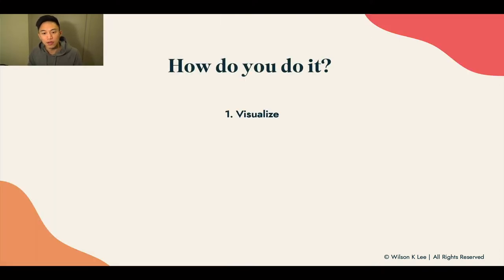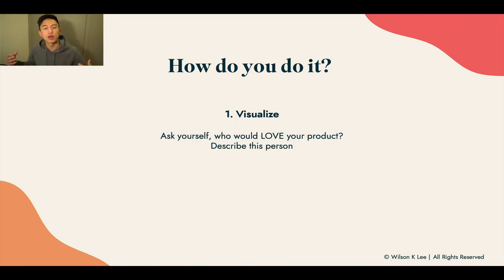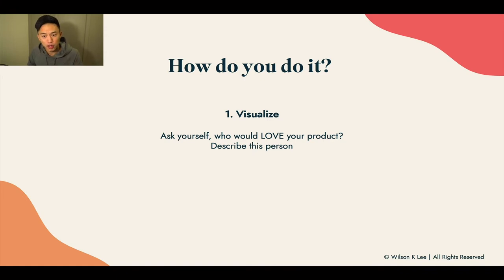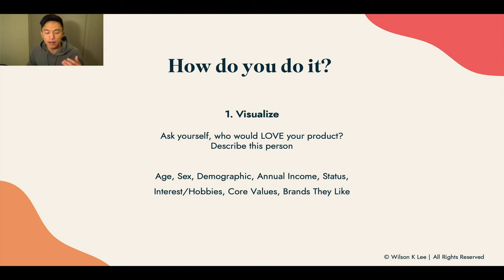So how do you do it? There are three steps. The first is to visualize — visualize who would be the ideal person that buys from you, believes in your product, and would actually enjoy what you have to sell. Describe this person: describe their age, how old they are.